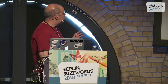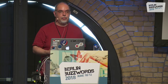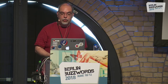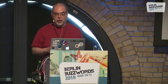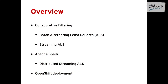I'll start by introducing the concept of collaborative filtering, and focus on two variants mainly — the batch and the streaming recommendation. I'll then look at some principles of streaming in distributed Spark engines, and finally talk about some of the practical issues with using streaming and batch recommendation systems.